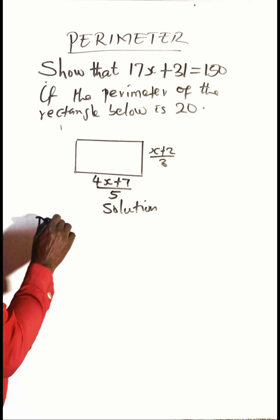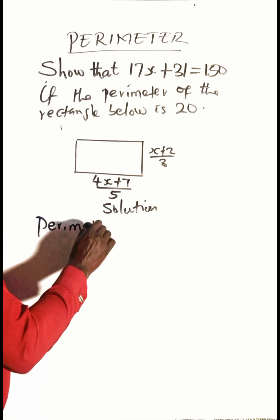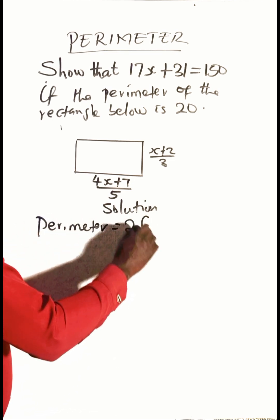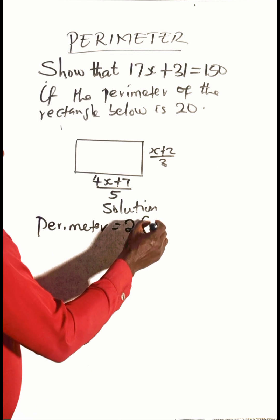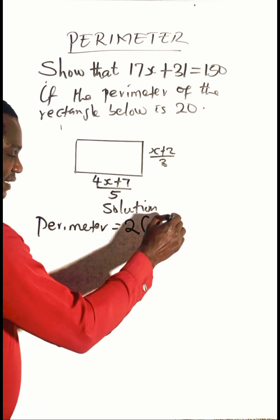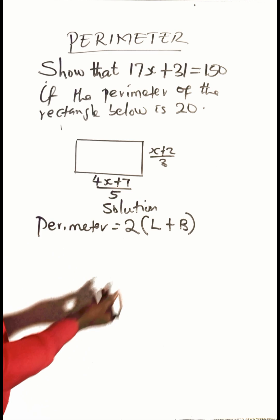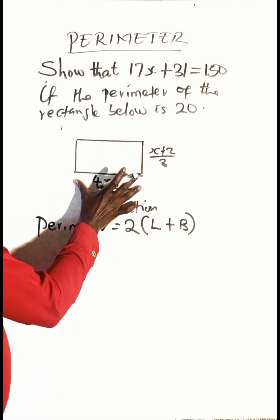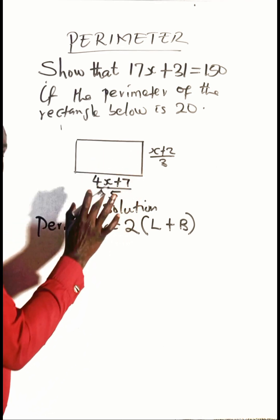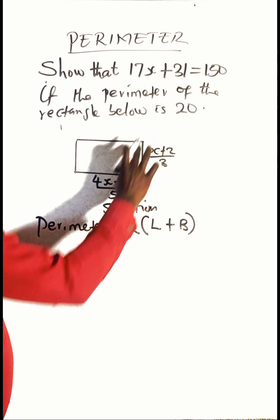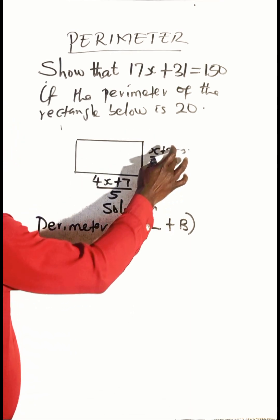What is the perimeter of a rectangle? We learned that the perimeter of a rectangle is two times the sum of the length and the breadth. In this rectangle, 4x plus 7 over 5 is your length, and the breadth or width is x plus 2 over 3.